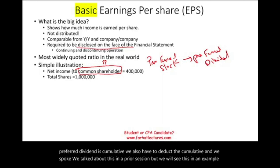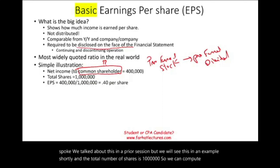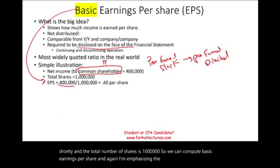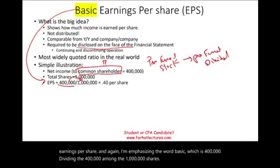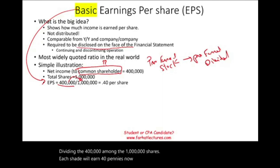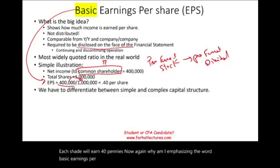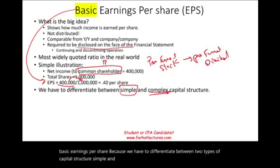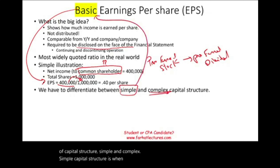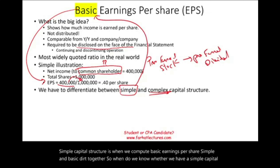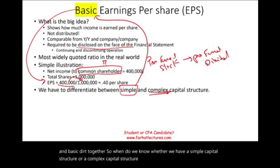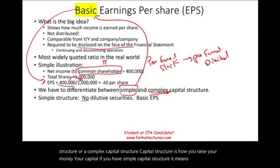The total number of shares is a million, so we can compute basic earnings per share, which is 400,000 divided by 1 million shares — each share will earn 40 pennies. Why am I emphasizing basic earnings per share? Because we have to differentiate between two types of capital structure: simple and complex. Simple capital structure is when we compute basic earnings per share. How do we know whether we have a simple or complex capital structure? Capital structure is how you raise your capital. Simple capital structure means you have no dilutive securities.